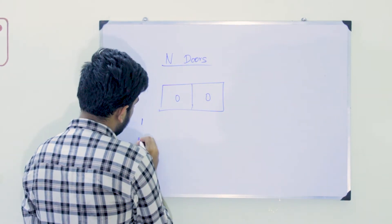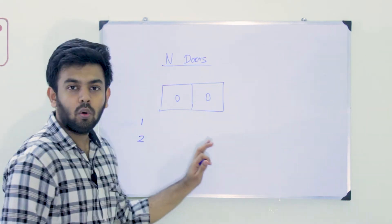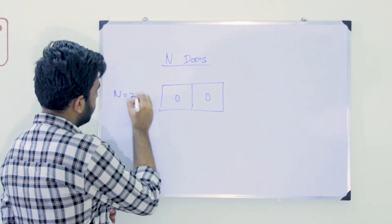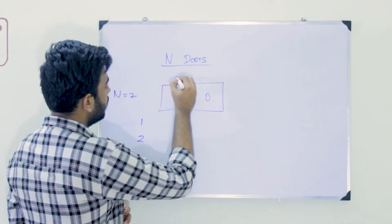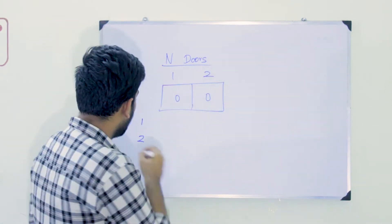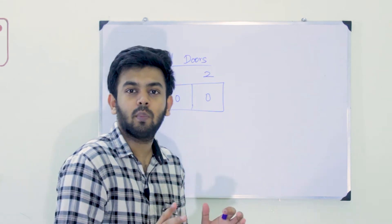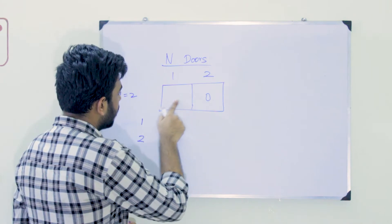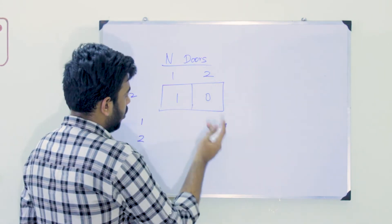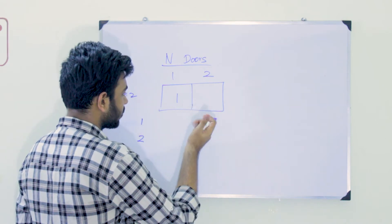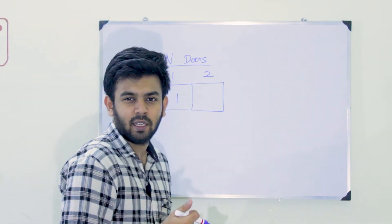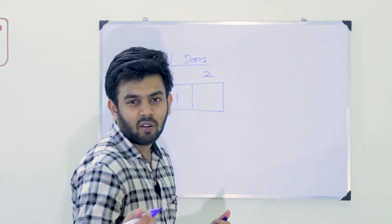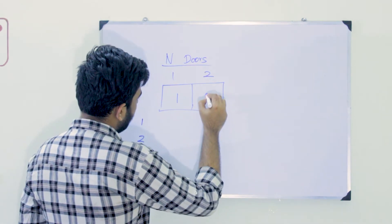We have doors one and two. Person one toggles all doors where their number is a multiple. One is a factor of two, so door one gets toggled by person one.